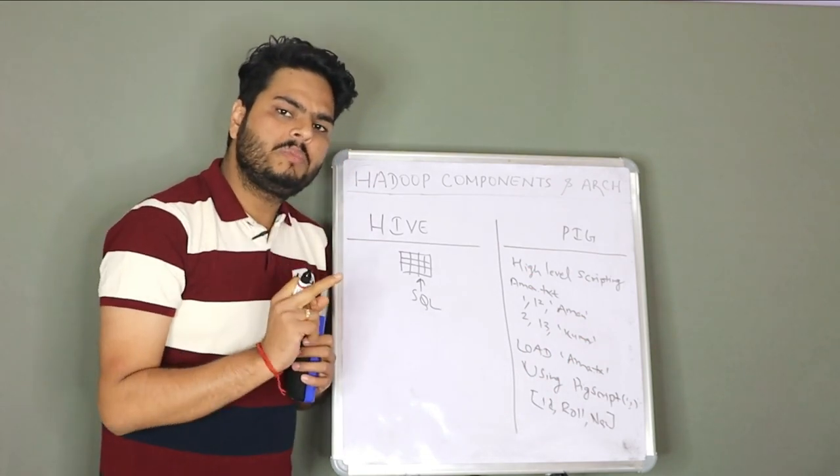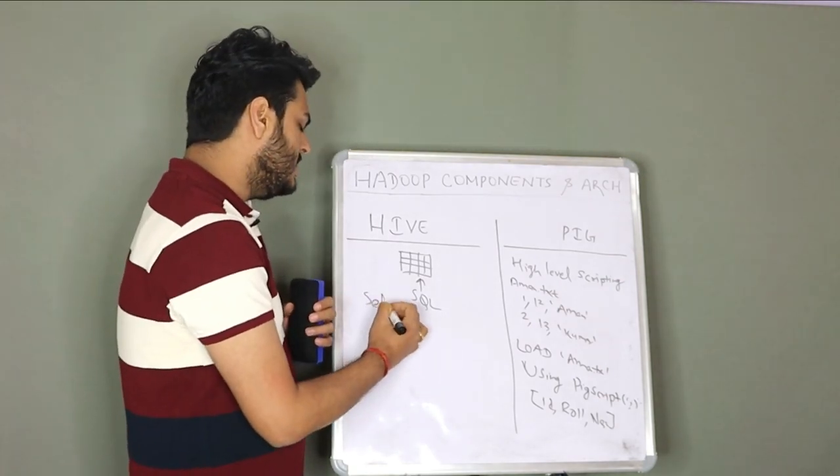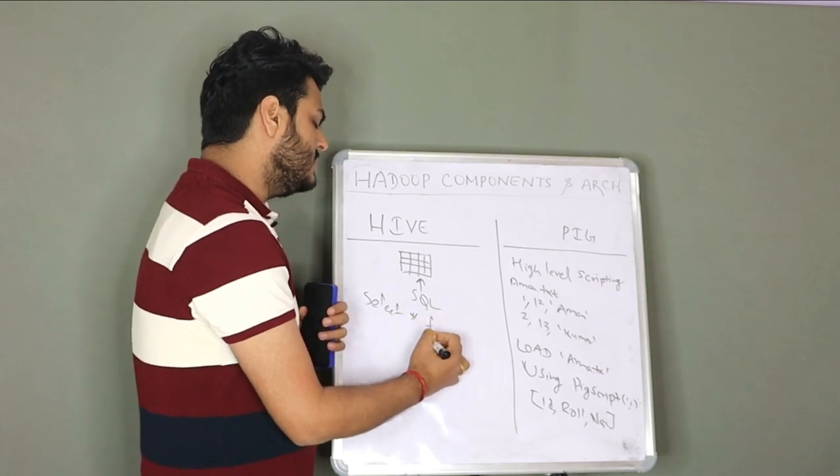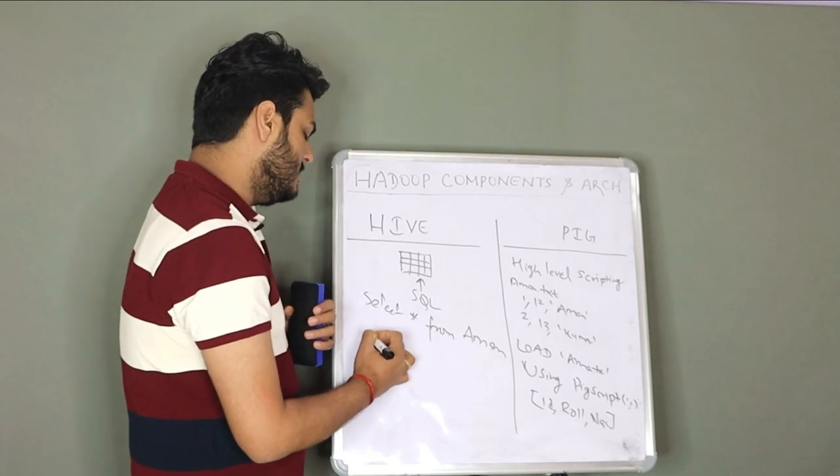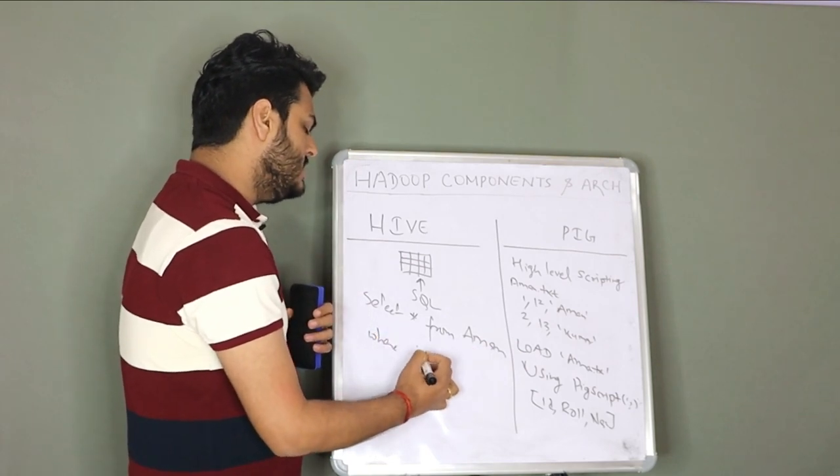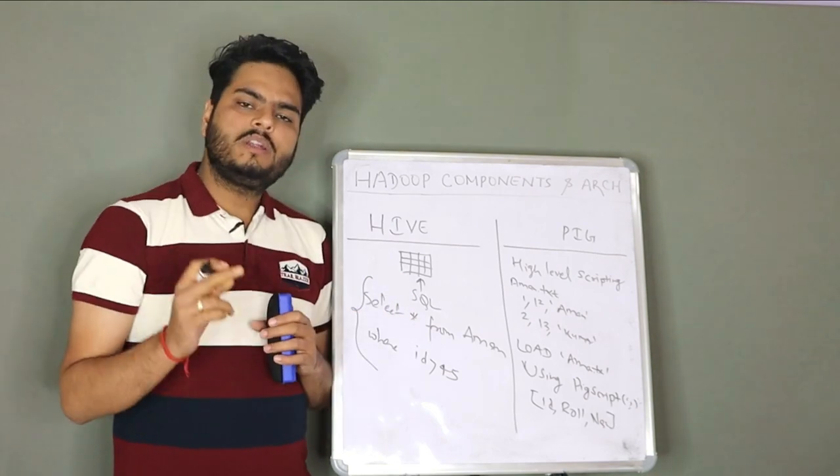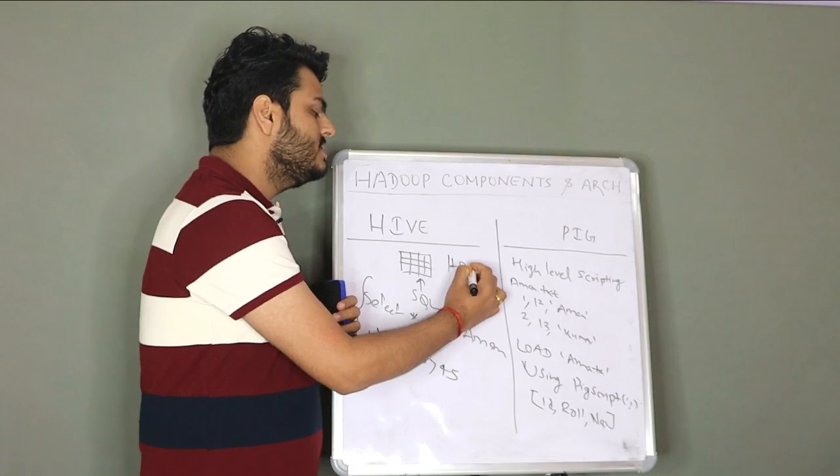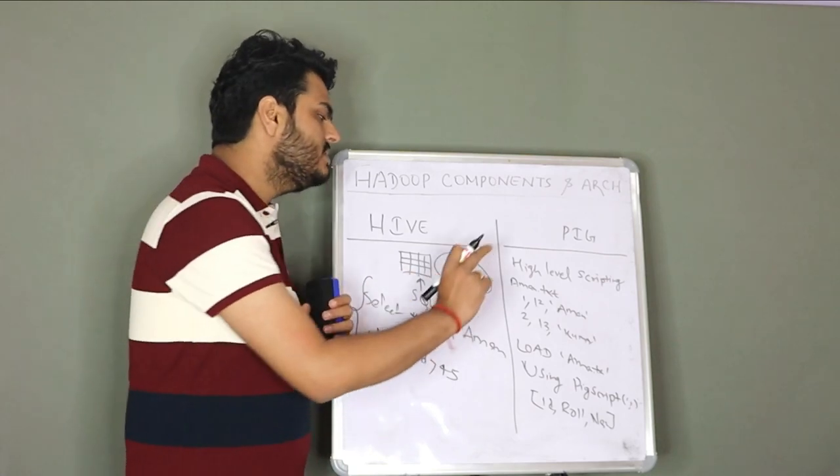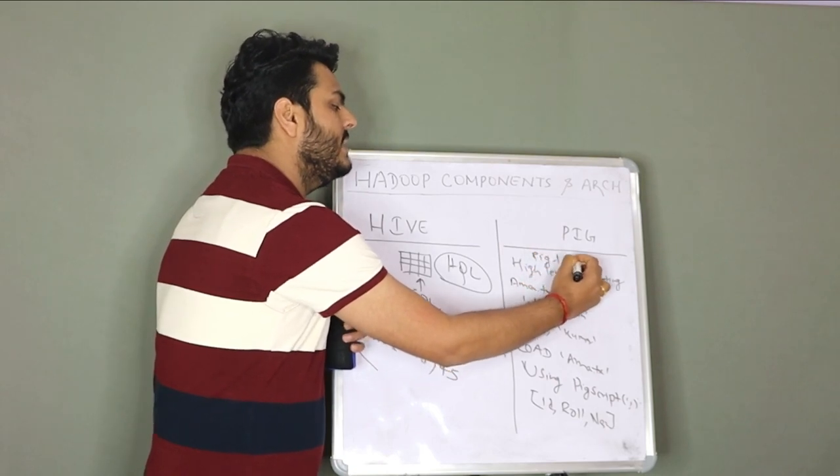How a Hive script will be written? Very similar to how you write a SQL query. Select star from, let's say table name is Aman, where ID is greater than 45. So Hive queries are very similar to SQL queries, but this is known as HiveQL, this language, Hive query language. And this language is known as PIG Latin.